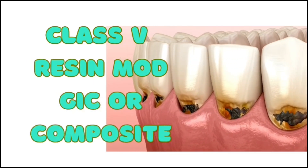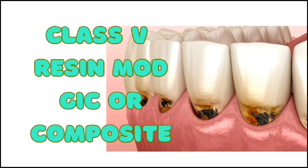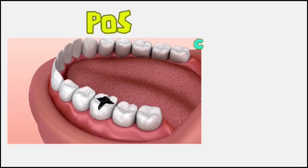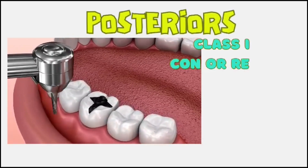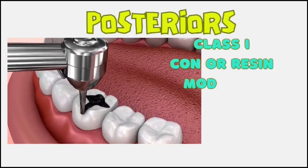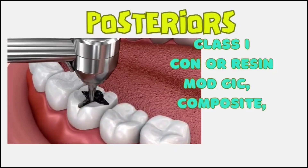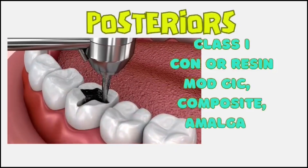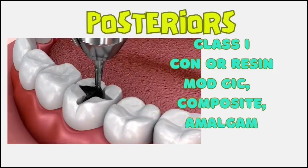For posteriors, if you get a Class 1 cavity, the best options are conventional or resin modified GIC, or composite.